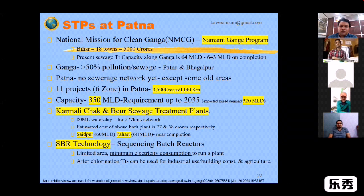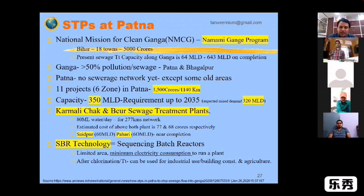50% of the pollution is only from Patna and Bhagalpur. The sewage network is only left to the city. The 11th project is only from the Government of India. The sewage zone costs around 300 crore, and the 30th project will increase the requirement to 350 million liters per day.